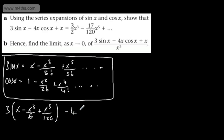Then we're going to have minus 4x multiplied by cos x, that's going to be 1 minus x squared over 2 factorial which is 2, and then we're going to have plus x to the 4th over 4 factorial, which will give me x to the 4th, 4 factorial is 24. And then what we need to do is add x and we want that to equal the right hand side.